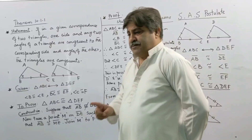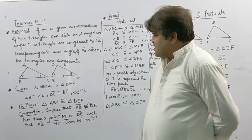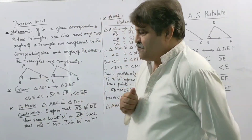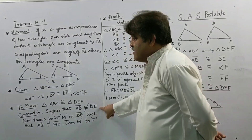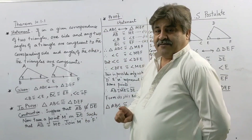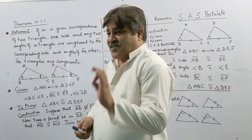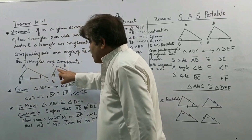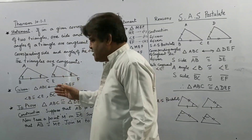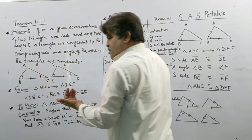The construction of this theorem is very important. The construction says: suppose AB is not congruent to DE. You must ask your teacher why he is saying this — that is the most important part to understand. He says because if AB were congruent to DE, then this side is congruent to this, this side is congruent to this, and SAS would come into play and the triangles would be congruent. So here we suppose AB is not congruent to DE.